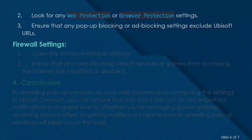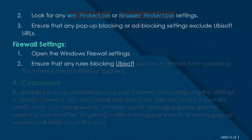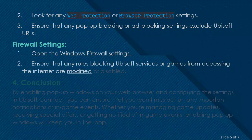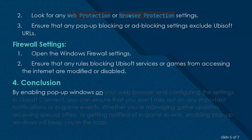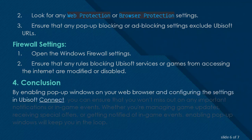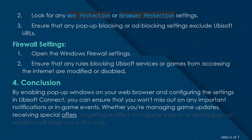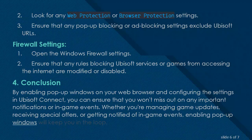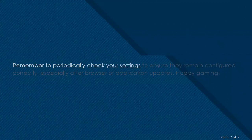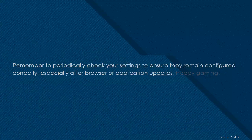Firewall Settings: Open the Windows Firewall Settings and ensure that any rules blocking Ubisoft services or games from accessing the internet are modified or disabled. By enabling pop-up windows on your web browser and configuring the settings in Ubisoft Connect, you can ensure that you won't miss out on any important notifications or in-game events — whether you're managing game updates, receiving special offers, or getting notified of in-game events. Remember to periodically check your settings to ensure they remain configured correctly, especially after browser or application updates. Happy Gaming!